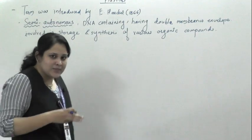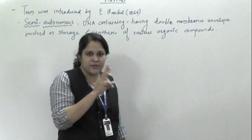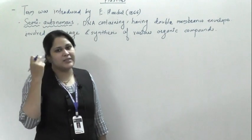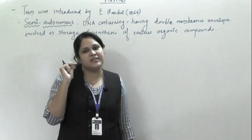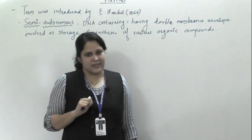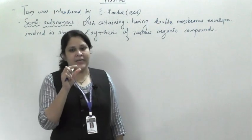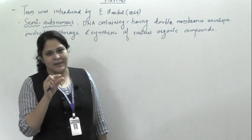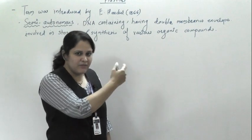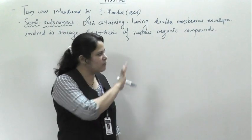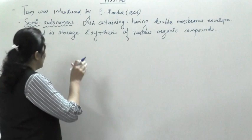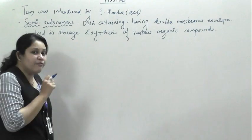These plastids have a double membrane — there is outer membrane as well as inner membrane. These two membranes are separated by inter-membranal space. The width and details of this we will see later when we study the structure and function of plastids.